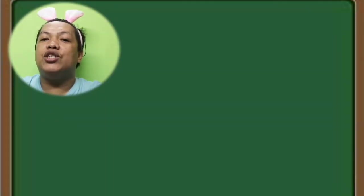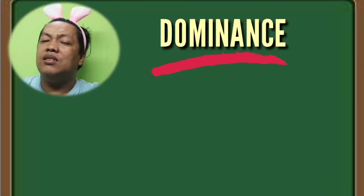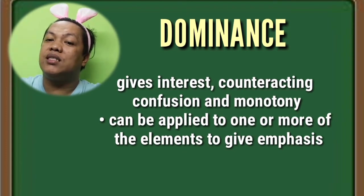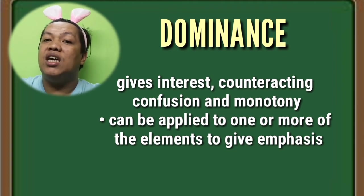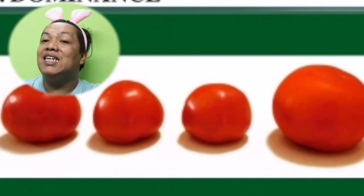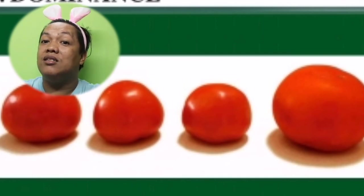The very last visual design element is dominance. Dominance gives interest, counteracting confusion and monotony in a design, and can be applied to one or more elements to give emphasis. For example, all the candies shown are orange in color, but the dominant one is the biggest object. Another example is the advertisement of Jellybee, where the dominant color is either red or orange.